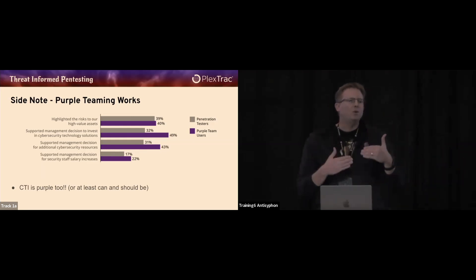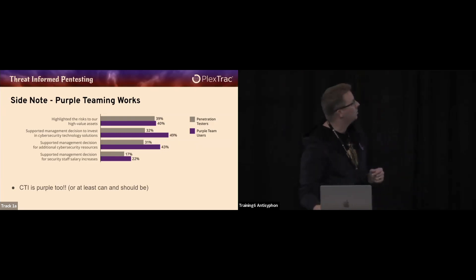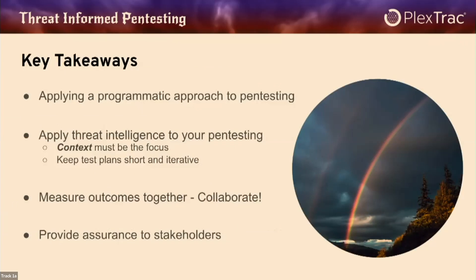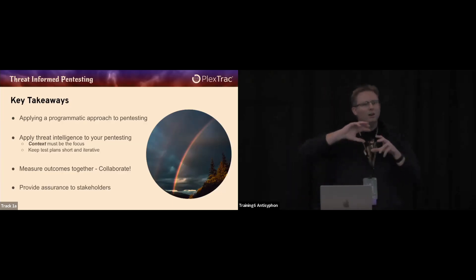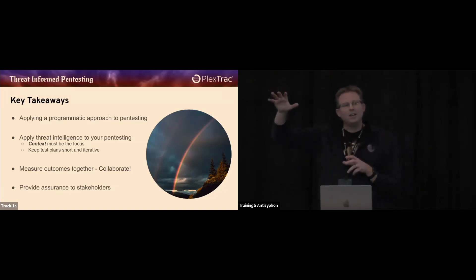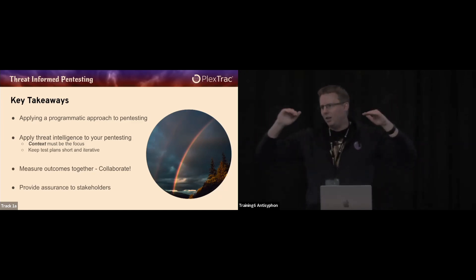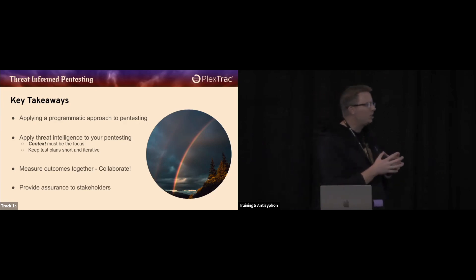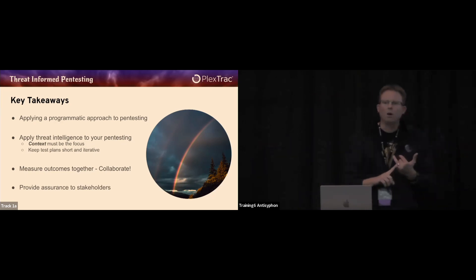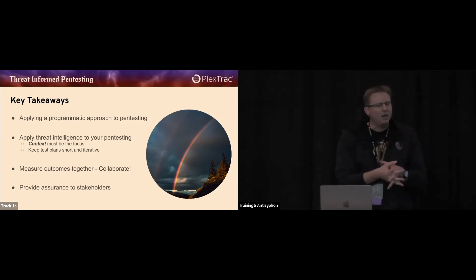The threat intelligence team is part of the purple team as well — they can be purple. They don't have to be solely identified as a responsive or blue team capability; utilize them as part of your red teaming and pen testing program. You'll continue to see better results and more informed pen testing as a service. The key takeaways: by applying a programmatic approach to pen testing, you'll improve more iteratively and quicker from a security perspective. Apply threat intelligence to your pen testing — context has to be the focus — and keep test plans short and iterative. You can still have quarterly or annual pen tests for broader-scoped multiple attack path approaches. Measure outcomes together — collaboration is critical.